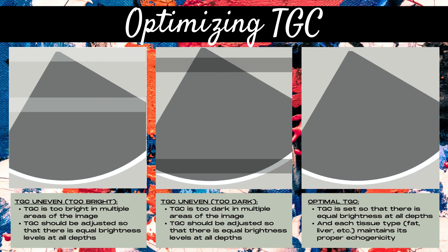Now let's talk about how to optimize the TGC control. In the far left image, the TGC is uneven — it's too bright in certain areas. The TGC should be adjusted so that there is equal brightness at all depths, and all tissue types maintain their proper echogenicity.